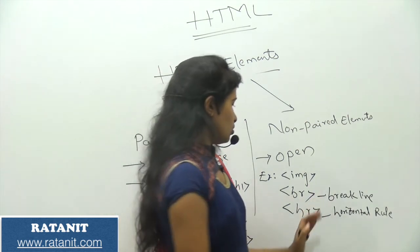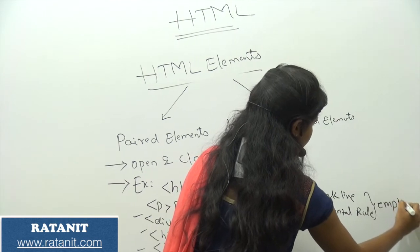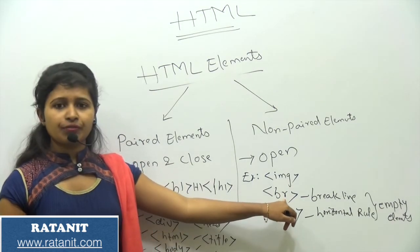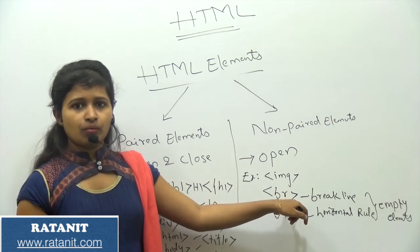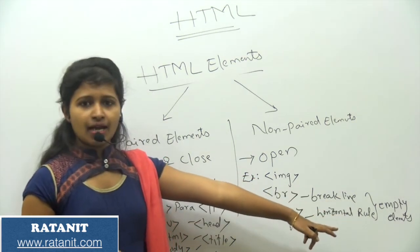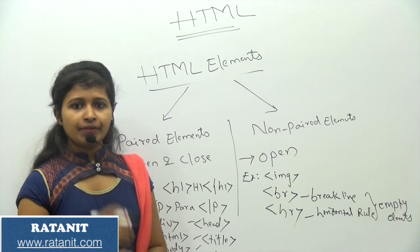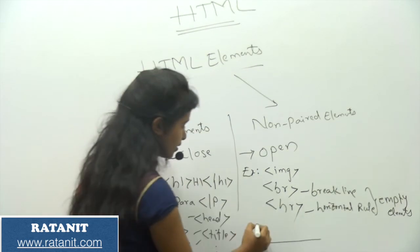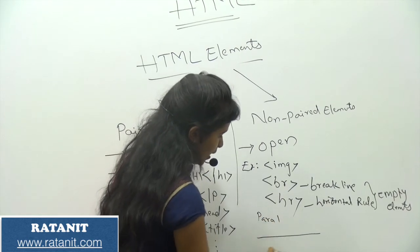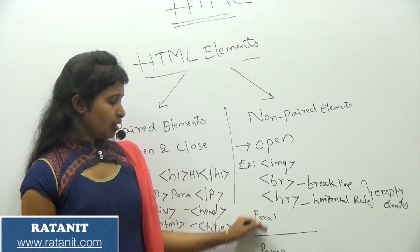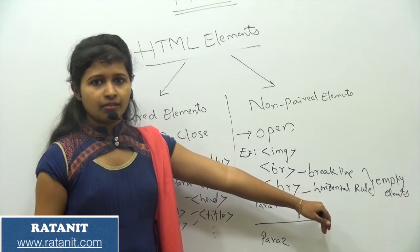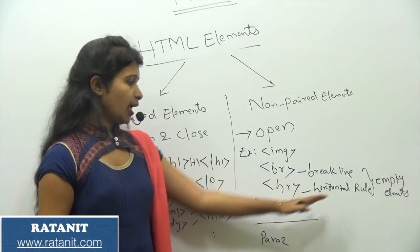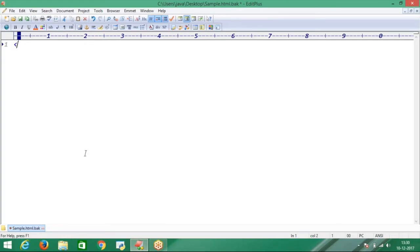We can also call non-paired elements 'empty elements.' The reason is that br is not used for any content — it's used to break a line, so there is no content for the br element. Similarly, hr (horizontal rule) is used to divide sections with a horizontal line — for example, between paragraph one and paragraph two — without inserting any content. That's why these are called empty elements.